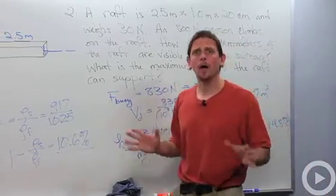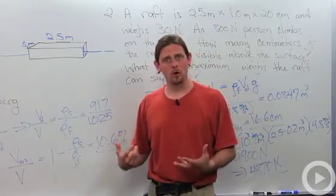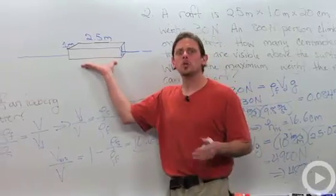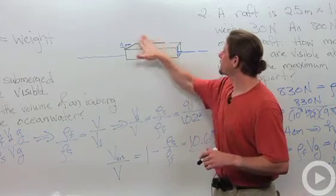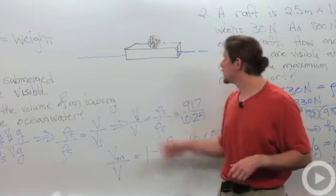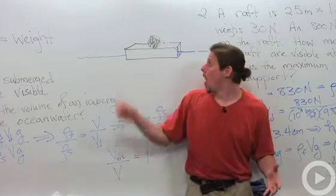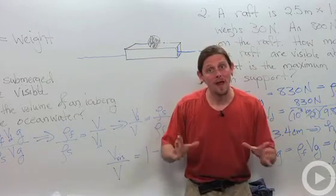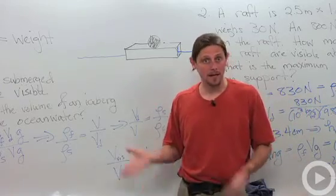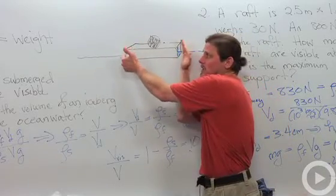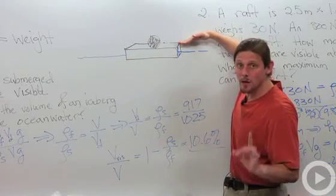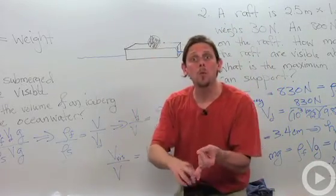Let's do one qualitative problem with no numbers — just thinking about how flotation works. Suppose we have a raft and we place a lead ball on top of it and ask what happens to the water level. The lead ball's weight adds to the weight of the raft. Since the buoyant force must still equal the total weight, the raft displaces more water — it sinks a little further down — and that causes the water level to rise, because the raft is now displacing its own weight plus the weight of the lead ball.